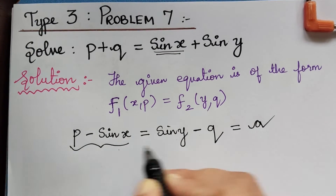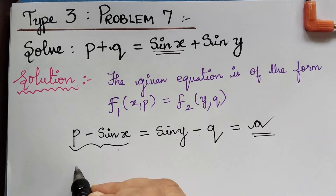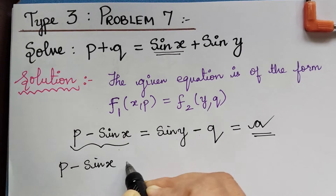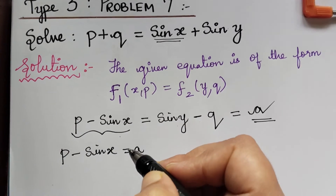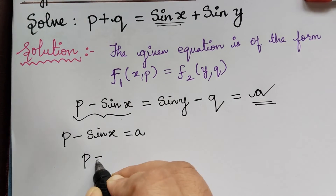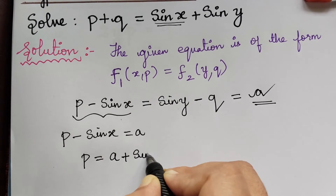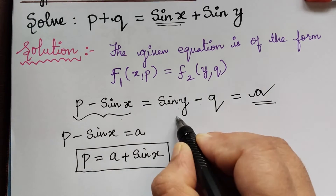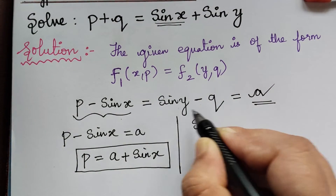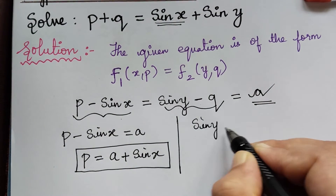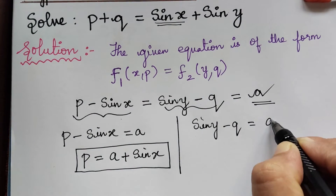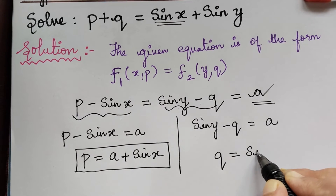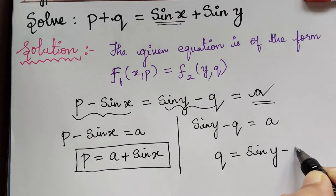Each of the terms has to be equated to a. First, p minus sin x equals a, from which we obtain p equal to a plus sin x. Next, sin y minus q equals a, from which we obtain q equal to sin y minus a.